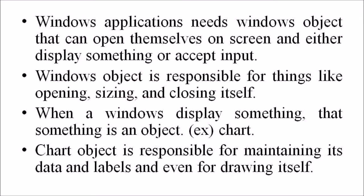For example, a Windows application needs Windows objects that can open themselves on screen and either display something or accept input. The Windows object is responsible for things like opening, sizing, closing, etc. When a Windows application displays something, that something is an object — for example, a chart, a document file, or something similar.